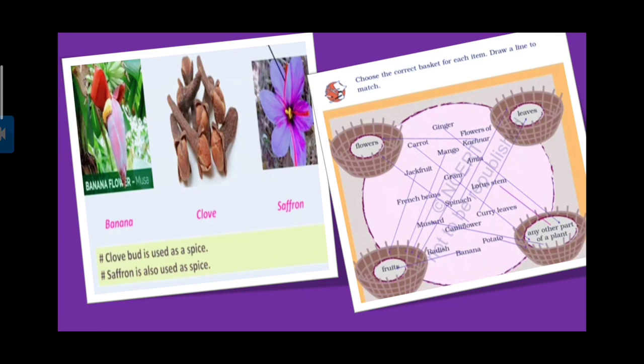So which flower, fruit, which leaves? Match. For example flowers of kachnaar flower. So jackfruit, fruit, fruit match. Potato, potato stem, stem. So any other part of a plant. Match. Banana fruit. Mango, mango fruit, fruit match. Spinach, spinach.